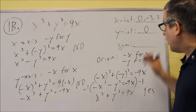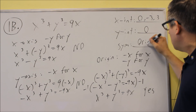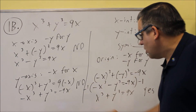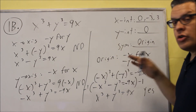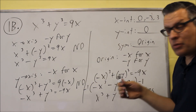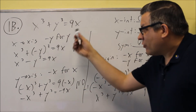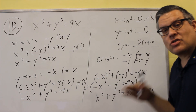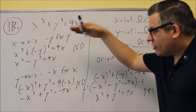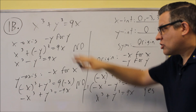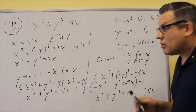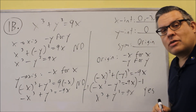So the answer here is origin symmetry. When you do your work, label each symmetry test — x-axis, y-axis, and origin — with your work underneath each. You don't have to write out 'negative y for y' or 'negative x for x'; that's just to show what we're doing. Labeling it clearly is what allows me to give you full credit.